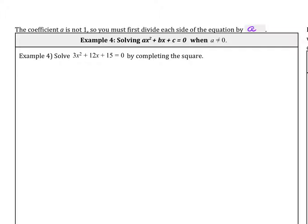Solve 3x squared plus 12x plus 15 equals 0 by completing the square. So the very first thing we do is we divide by the a value. So it's really important that in order to complete the square, a has to equal 1.